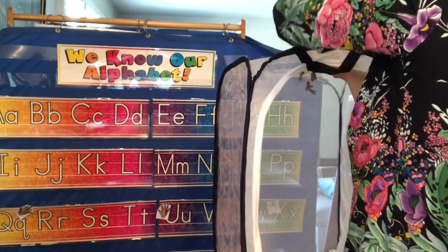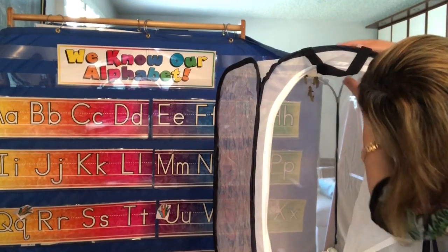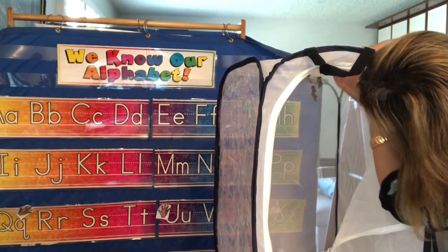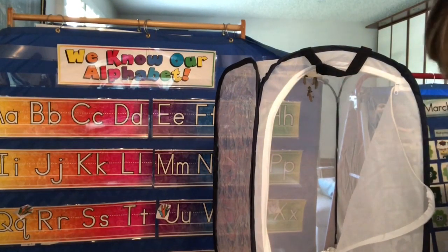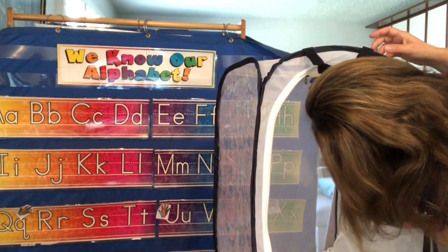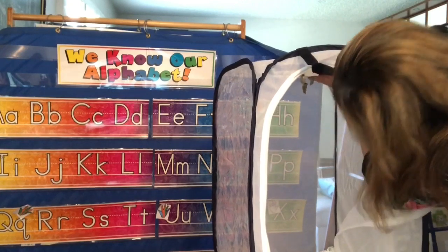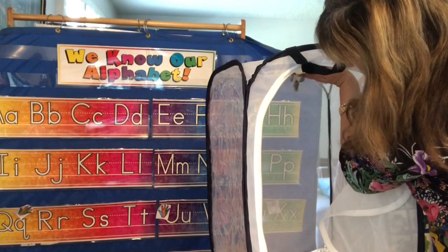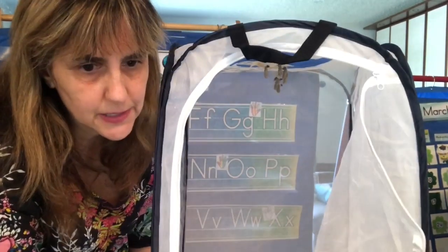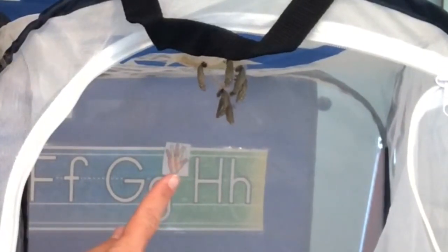I wonder what color they're gonna be. They are painted ladies — you guys can Google 'painted ladies' and see what they're gonna look like if you're curious. I'm just gonna put a few more pieces of tape just in case, because we don't want them to fall. If they fall, they can't open their wings and then it's very sad for them. We have six little caterpillars — can you see them guys? They're very tiny. These are the little chrysalis, they're gonna open up and the butterfly is gonna come out.